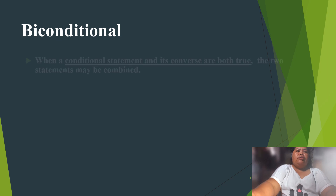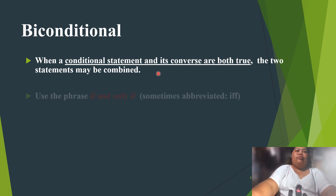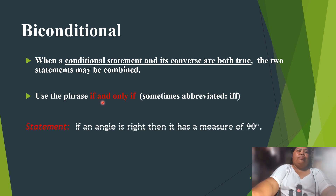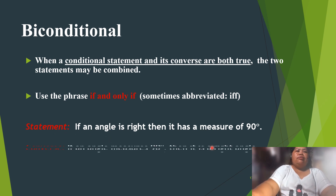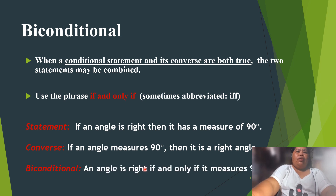Biconditional: when a conditional statement and its converse are both true, the two statements may be combined using the phrase 'if and only if' (sometimes abbreviated as 'iff'). Example: 'If an angle is right, then it measures 90 degrees,' and the converse 'If an angle measures 90 degrees, then it is a right angle' combine to: 'An angle is right if and only if it measures 90 degrees.'